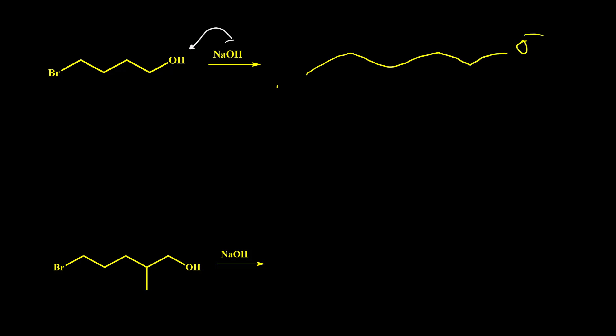If we have halo alcohols, we can perform internal Williamson ether synthesis. Because of the electron-withdrawing effect of the halogen, this type of alcohol is more acidic, and sodium hydroxide can easily deprotonate them. The OH takes the hydrogen from the alcohol functional group, forming the alkoxide anion.